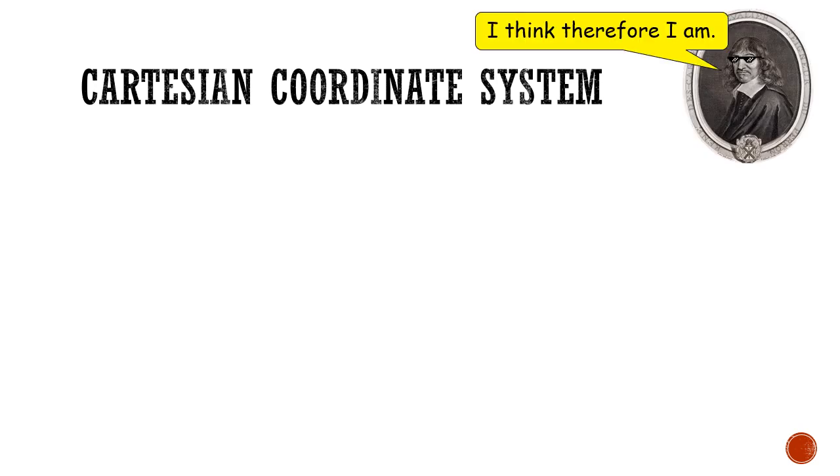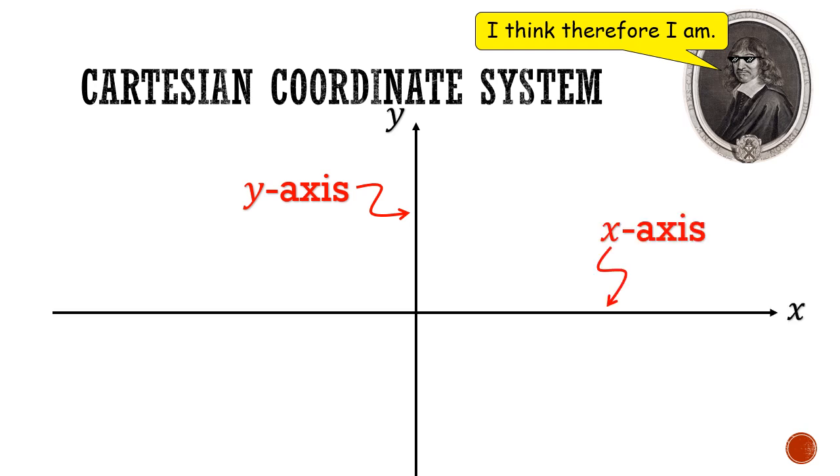We first take this space and divide it into four quadrants using two lines. The vertical line is known as the y-axis, and the horizontal line is known as the x-axis. Where the two axes meet is a point that we call the origin, and this is our reference point, much like the National Museum in the Singapore map, except that every math student will know this point.